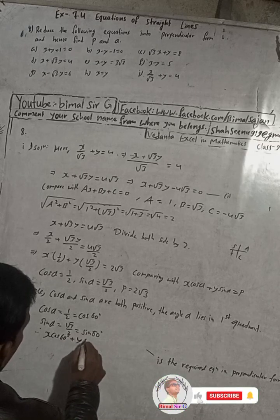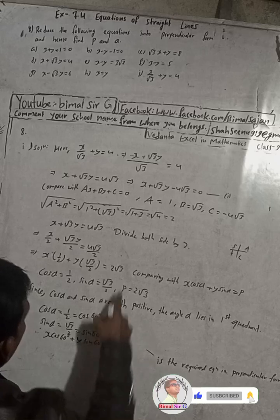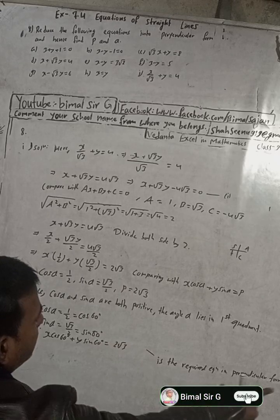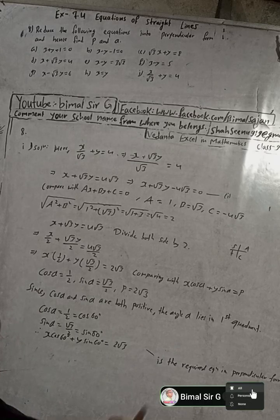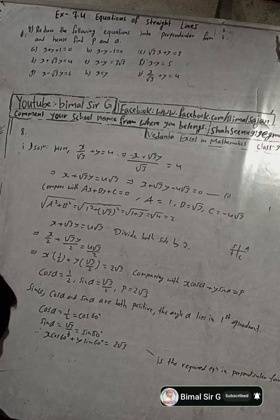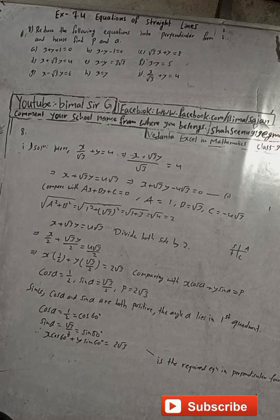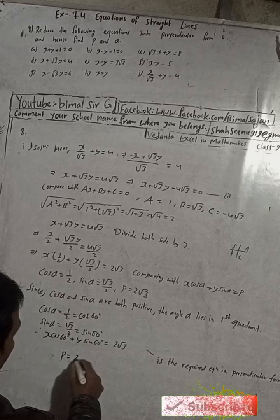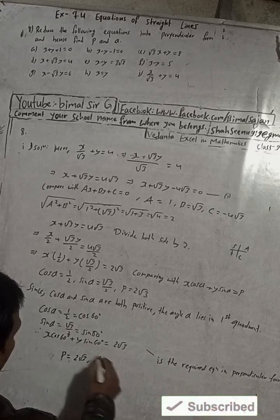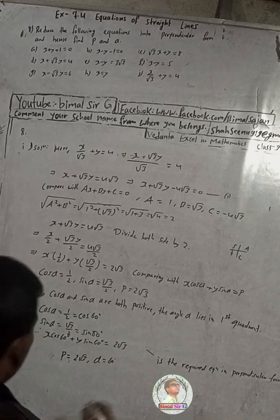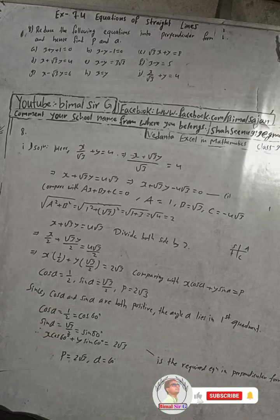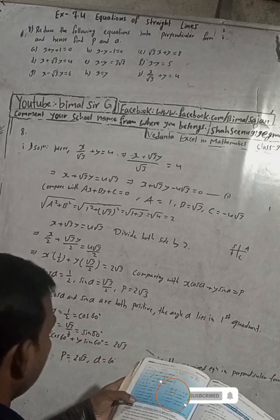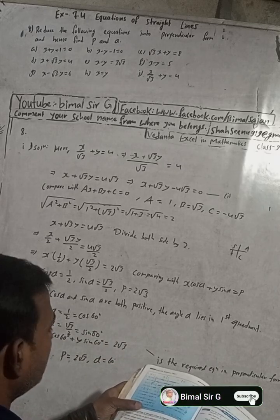Therefore, the equation in perpendicular form is x cos60° + y sin60° = 2√3. This is the required equation in perpendicular form. Here p = 2√3 and α = 60°.